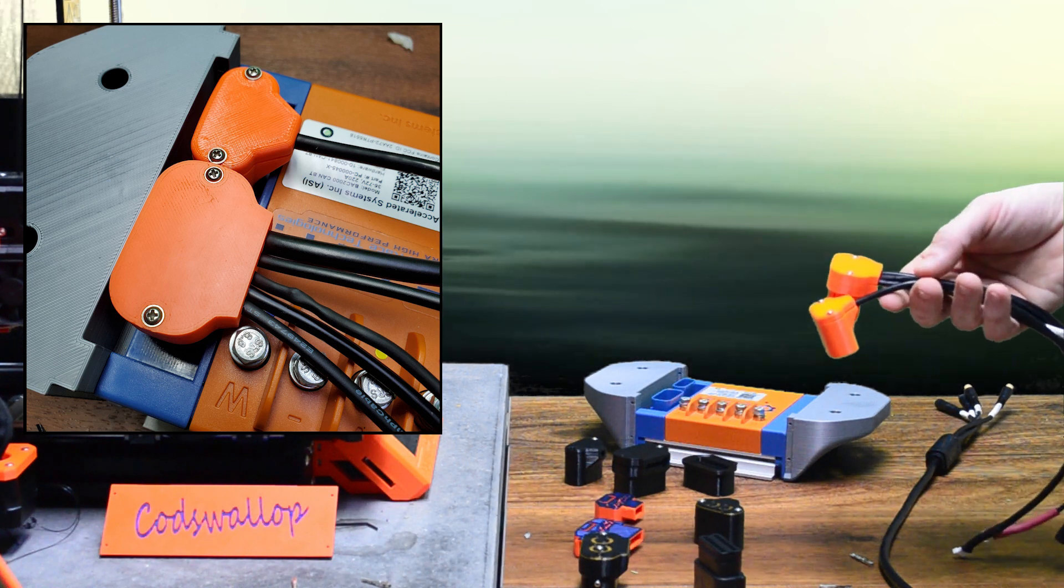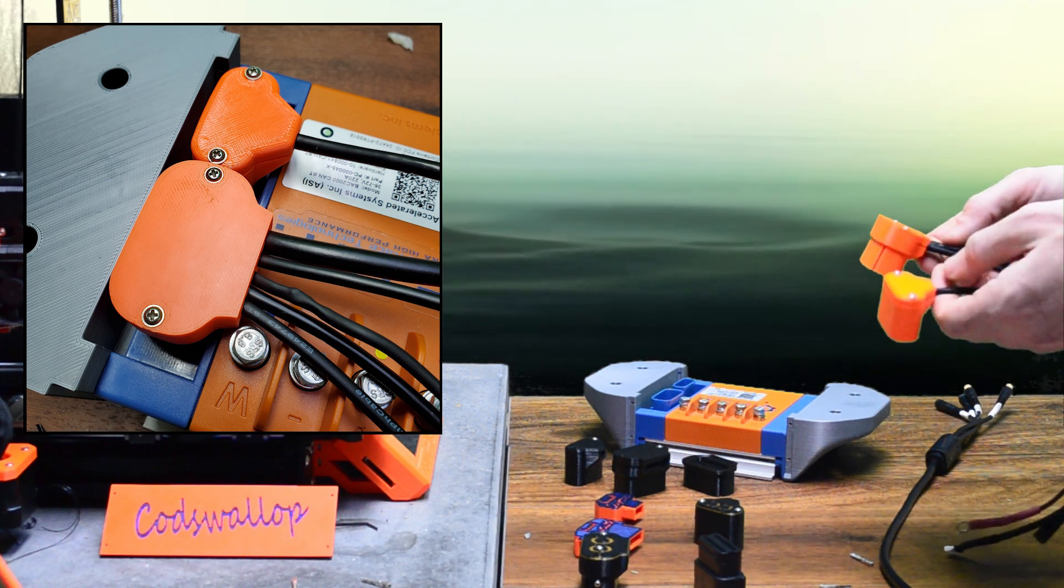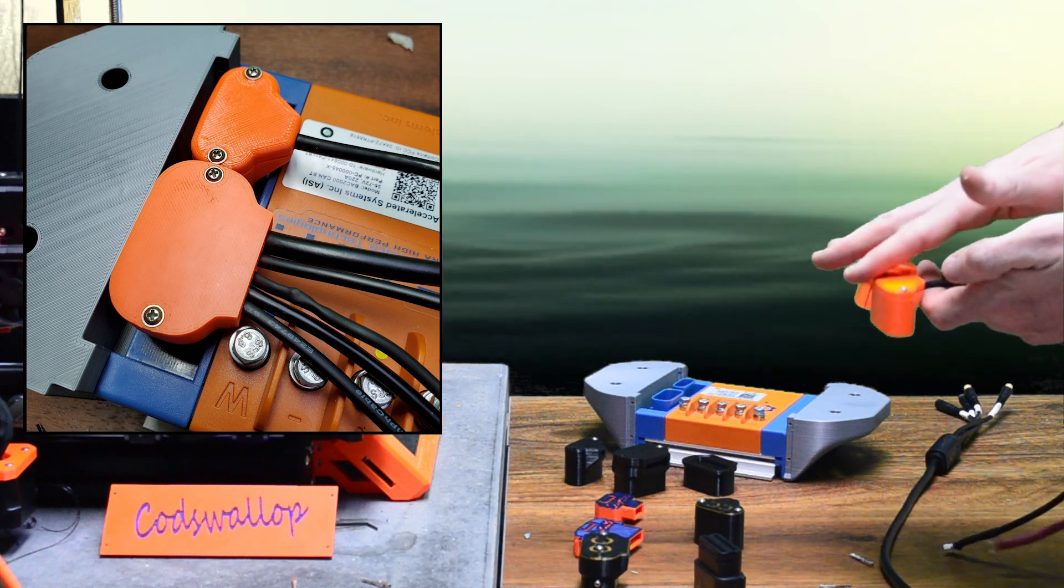If you do have the existing Molex connectors in your bike the two part design means that you can extract the pins and then plug them into the corresponding slots on my plug.